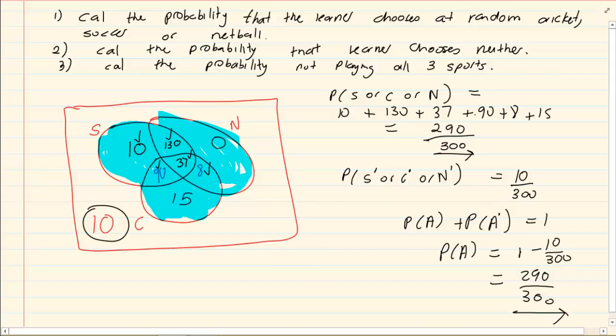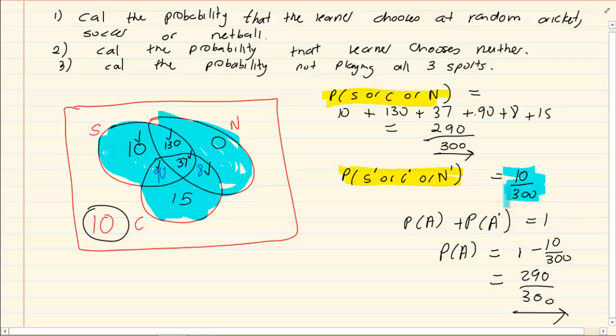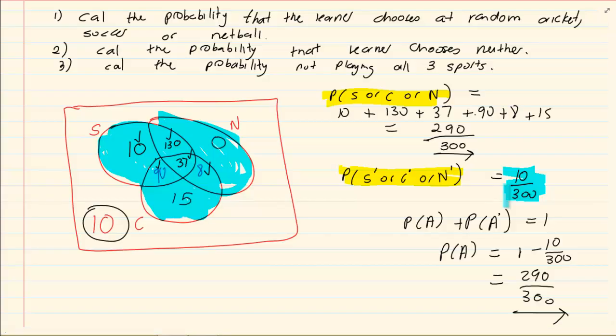So when you are doing the not, it can help you to do the probabilities of sums that are large by simply eliminating that specific one. Right. Now if I say, calculate the probability that a learner chooses neither any sport. So there you have it already. Probability it is 10 over 300 and calculate the probability not playing all three sports.